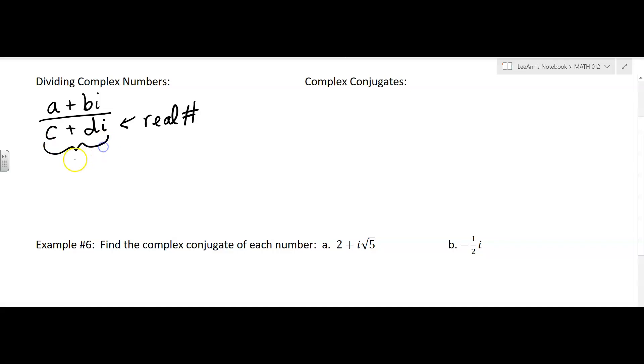So let's say this equals some real number r. Then you would have a plus bi over r, or a over r, which would be a real number, plus b over r, which would also be a real number. So that's kind of the big idea here that we're going with.